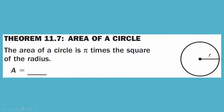Theorem 11.7: Area of a Circle. The area of a circle is pi times the square of the radius, or we could say that area is equal to pi times radius squared, or pi r squared.